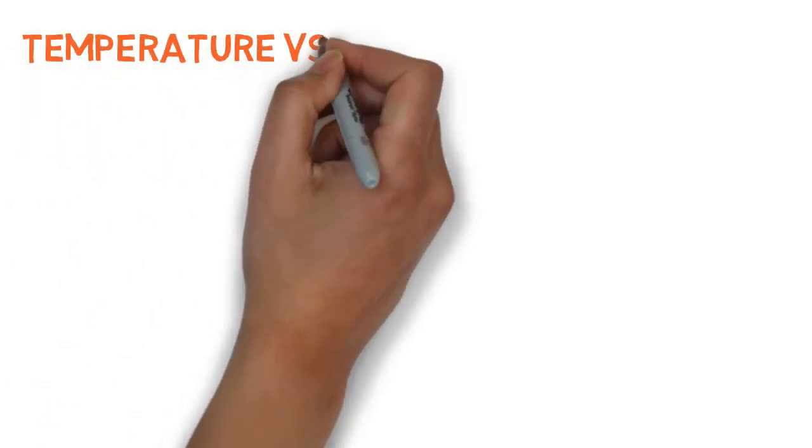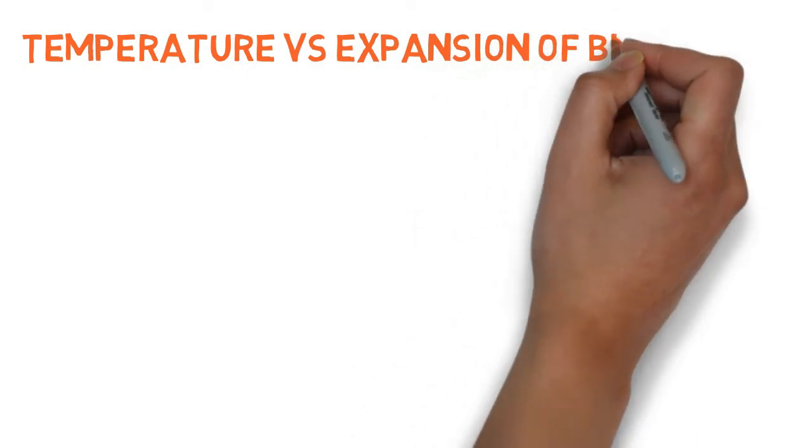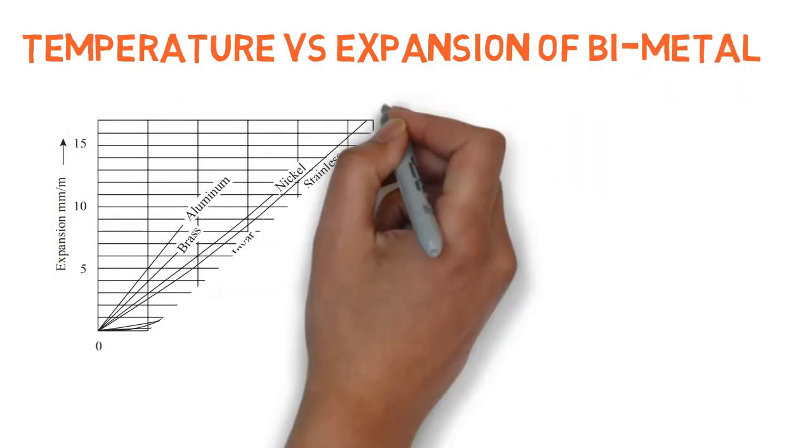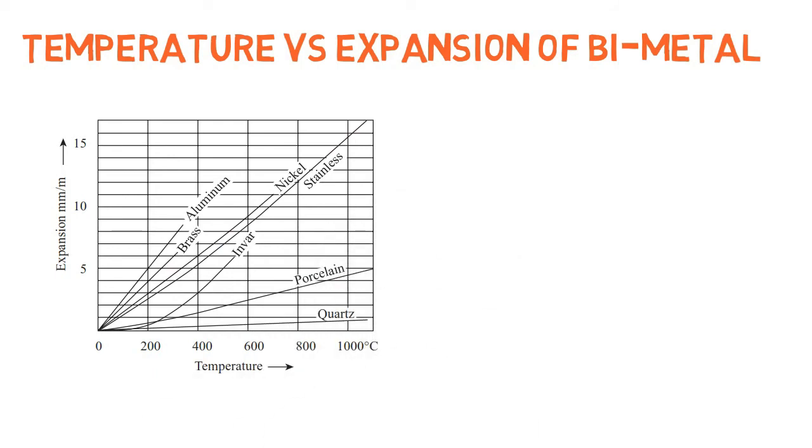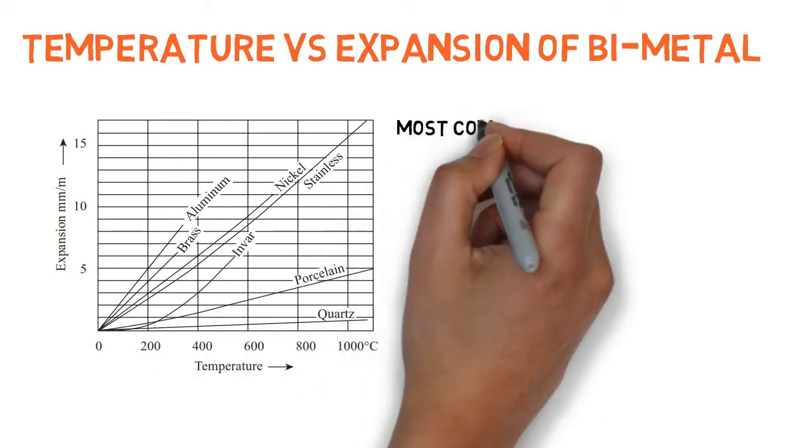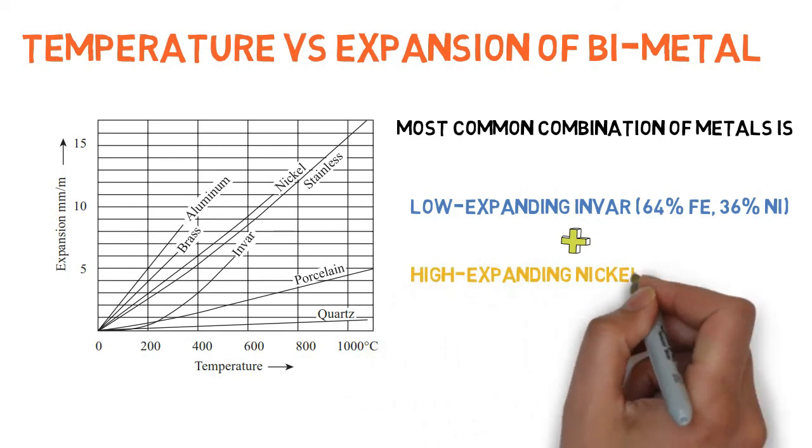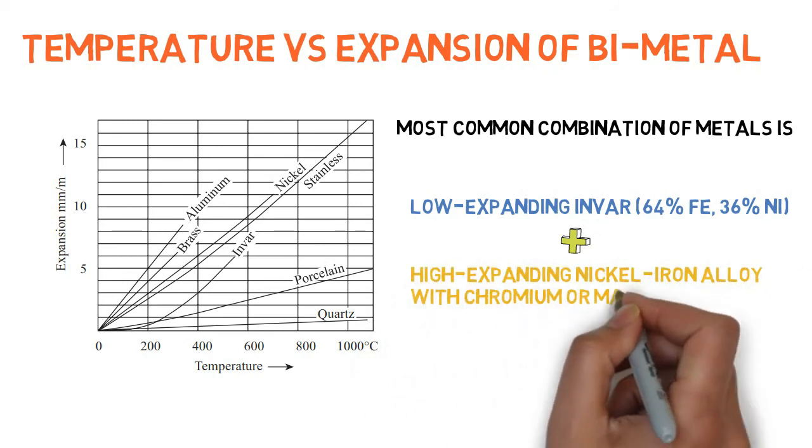Temperature versus expansion of various bi-metals can be seen in the graph below. The most common combination of metals is low expanding Invar and high expanding nickel iron alloy with chromium or manganese added.